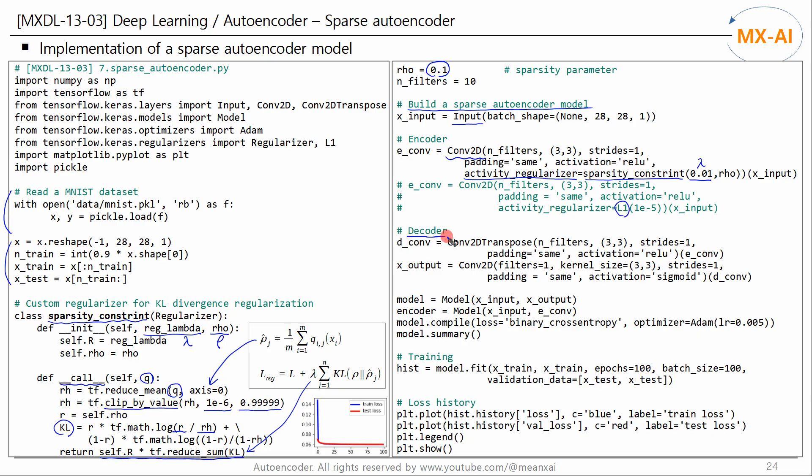Next, we create a decoder using a 2D transposed convolutional layer and a 2D convolutional layer. Create a model for training. Additionally, we create a model to obtain the outputs of the encoder. And then compile the model for training. We use binary cross-entropy loss. Fit this model to the training data.